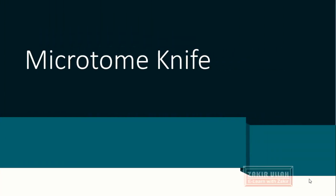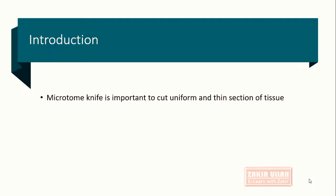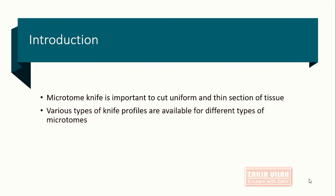Now discussing the different types of knives and the important features and properties related to the knife of a microtome. The knife of the microtome is very important because with its help we can cut uniform and thin sections from the tissue and the embedded block.